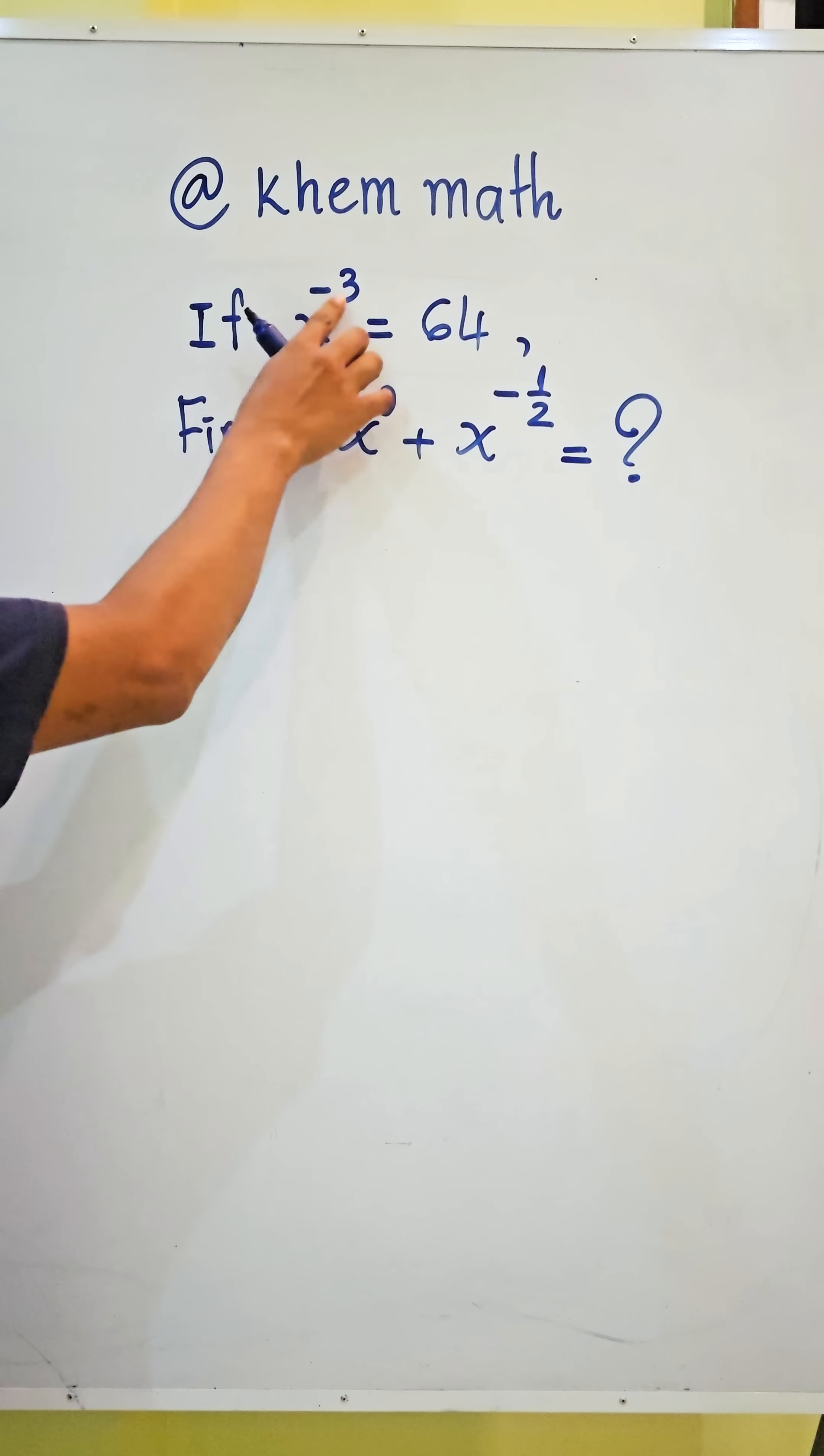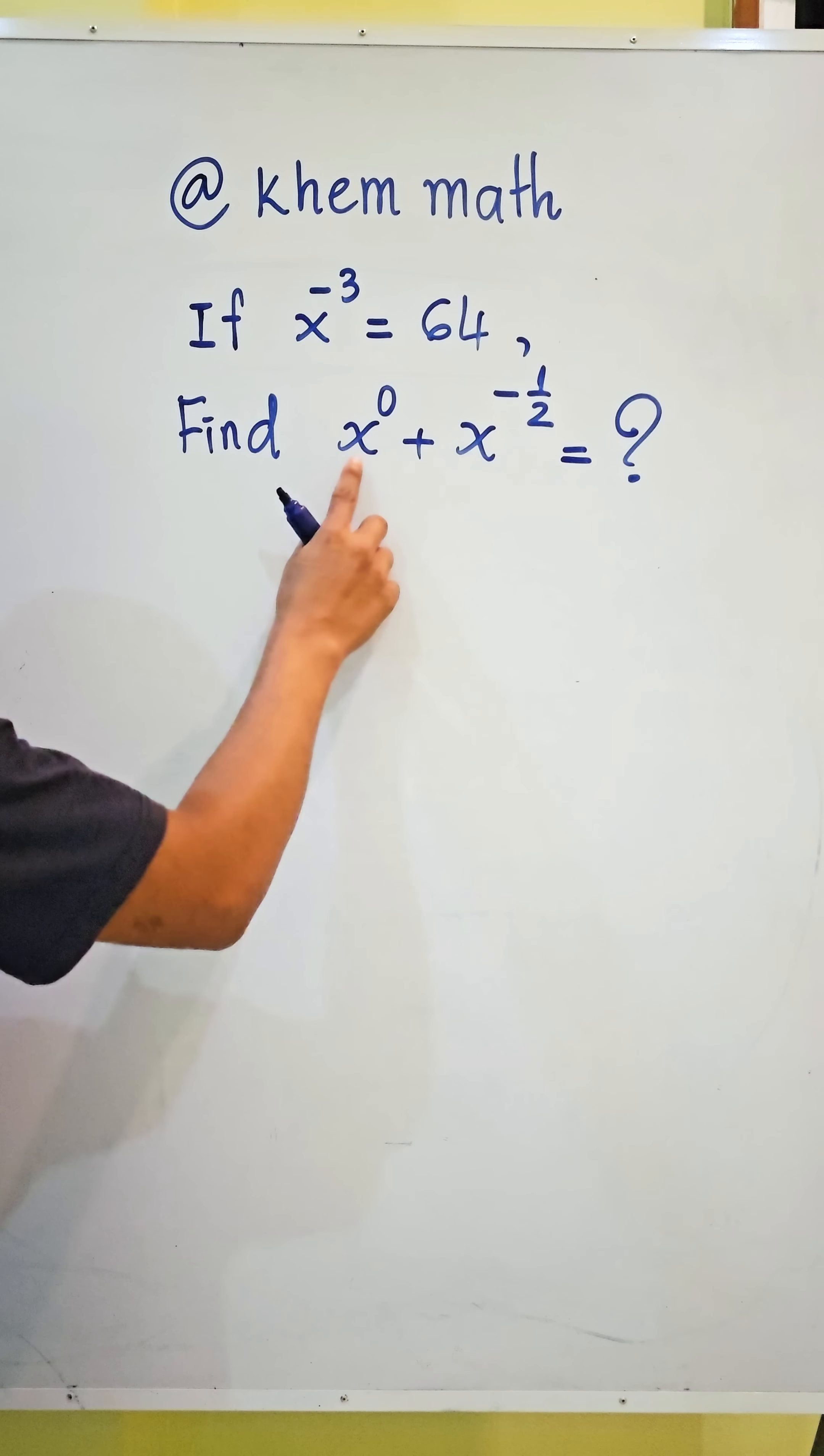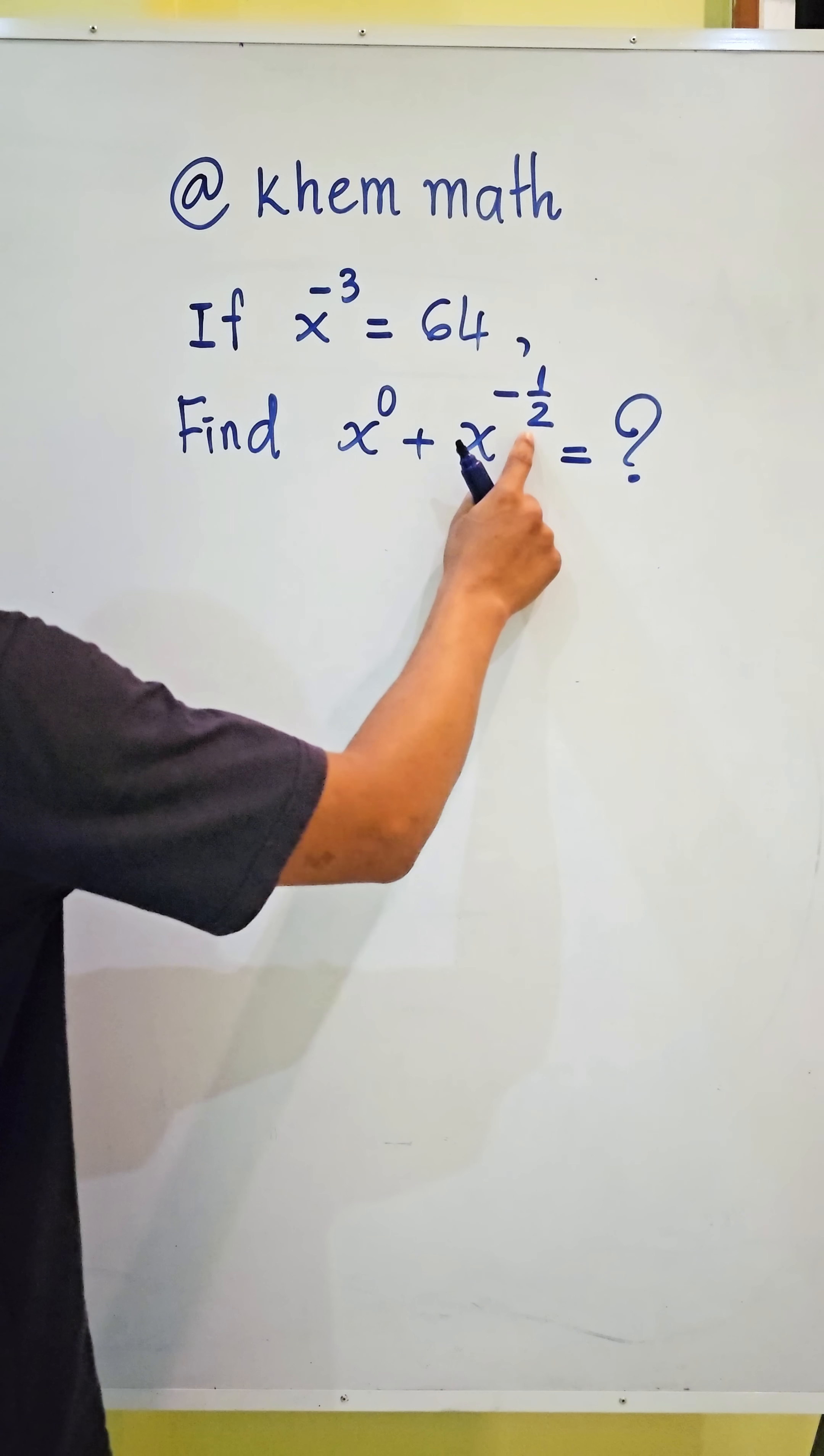If x power negative 3 equals 64, find the value of expression x power 0 plus x power negative 1 divided by 2.